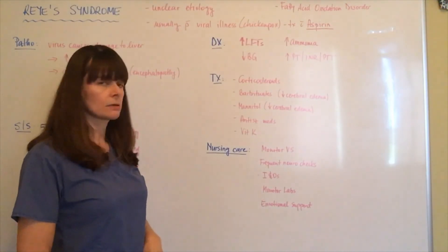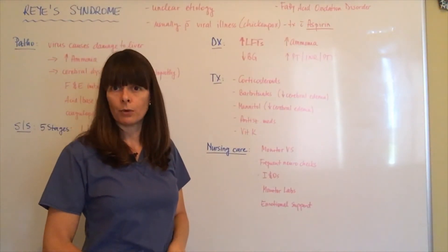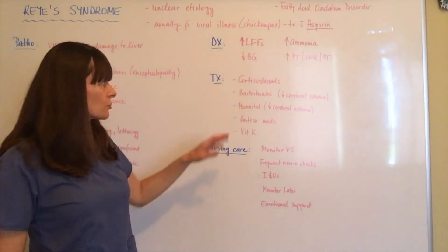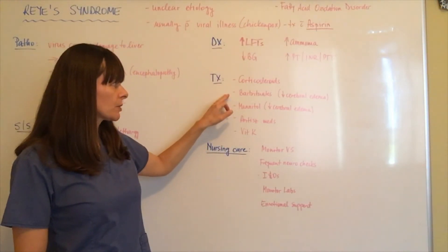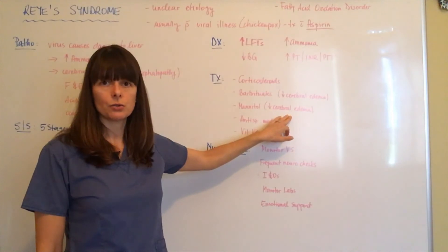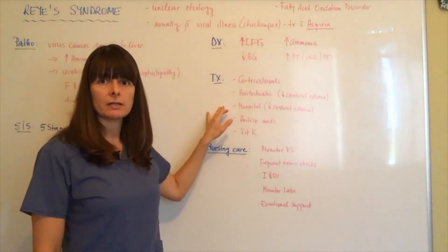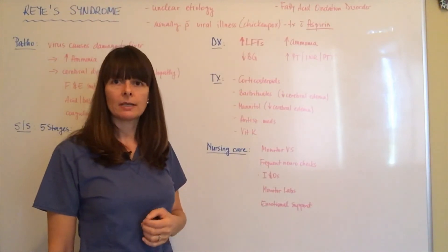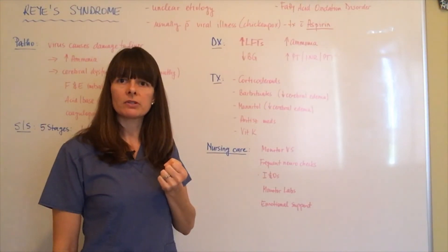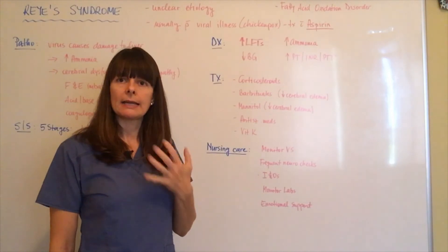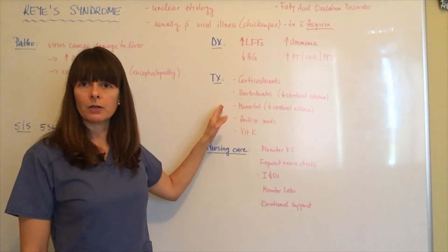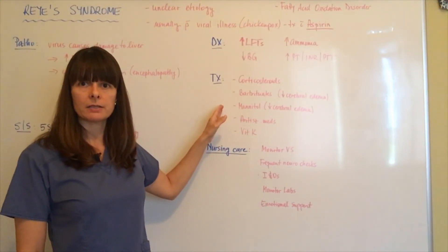Treatment is, of course, supportive care. Patients may require mechanical ventilation if they're unable to maintain their own airway. It is treated with corticosteroids and barbiturates as well as mannitol to decrease cerebral edema. Mannitol specifically is also an osmotic diuretic, basically acting like a hypertonic solution, pulling fluid from the cerebral cells that are swollen and edematous and excreting it in the urine. We'll have to be careful monitoring kidney function as well as electrolytes, because imbalances certainly can occur.